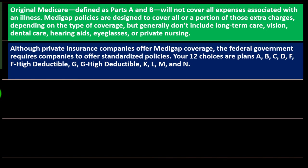The standardization makes things a little bit easier, though there are pros and cons — when you standardize something, you have fewer options to choose from. In any case, your 12 choices are plans A, B, C, D, F, F high deductible, G, G high deductible, K, L, M, and N.